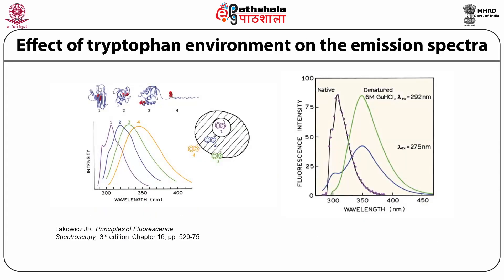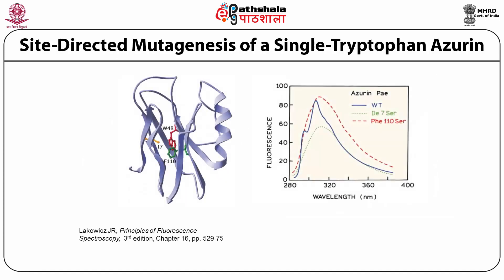We show the effect of tryptophan environment on emission spectra. When tryptophan is buried inside the protein core it has a fluorescence maximum around 350 nm, but as it is exposed toward the polar side (water) a dramatic shift in fluorescence maximum is observed — a blue shift. When tryptophan is exposed to water's polar environment a remarkable blue shift is observed. This is also used to monitor conformational changes between the native and denatured state; denaturation by 6 M guanidinium hydrochloride causes a red shift indicating conversion from native to denatured state.